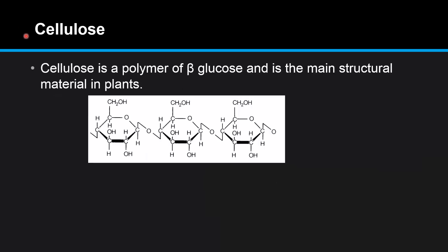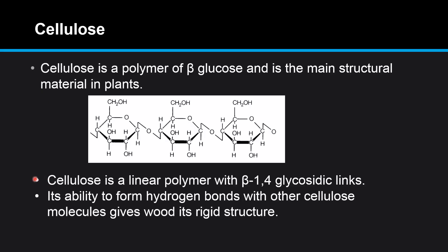Next we look at cellulose. Cellulose is a polymer of beta glucose and is the main structural material in plants. Cellulose is a linear polymer with beta 1,4 glycosidic links. Its ability to form hydrogen bonds with other cellulose molecules gives wood its rigid structure.